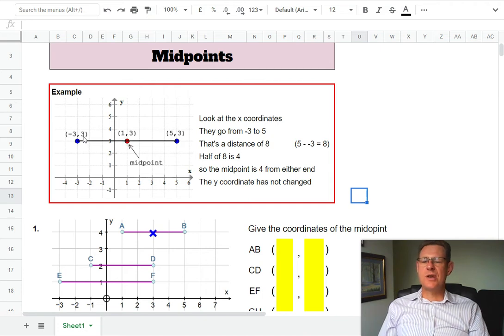You'll also notice that the y coordinate stayed exactly the same, threes all the way. Now there's a clever way of working out this midpoint using the average, the average of five and minus three. So if you add them together, you get two, and half of two is one.